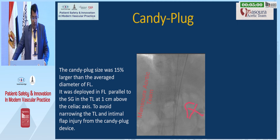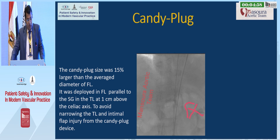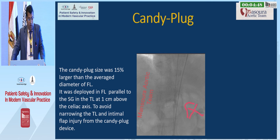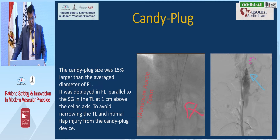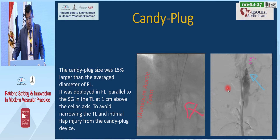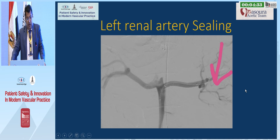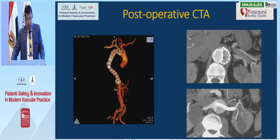The candy block size was 15% larger than the average diameter of the false lumen. It was deployed in the false lumen parallel to the stent graft in the true lumen at one centimeter above the celiac axis, to avoid narrowing of the true lumen and intimal flap injury from the candy block device. Left renal artery sealing with covered stent.